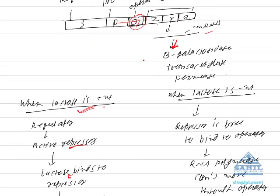So we have seen if lactose is present, the gene is switched on. And if lactose is not present, gene is switched off.